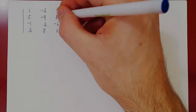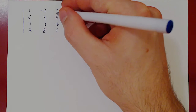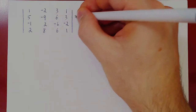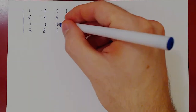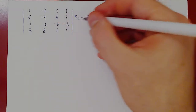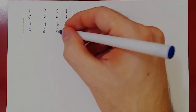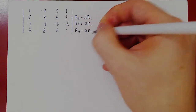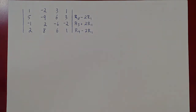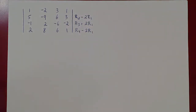Let's do row 2 minus 2 row 1, row 3 plus 2 row 1, and row 4 minus 2 row 1. We're using three row operations of adding a multiple of a row to a different row, and we know this will not change the determinant. So we'll have a completely different matrix, but it will still have the same determinant.